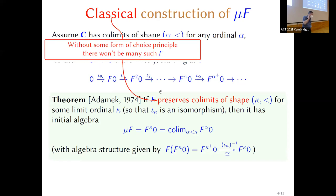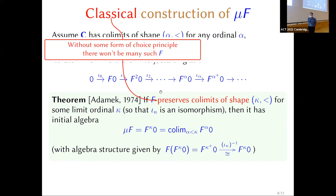The other issue is that constructively there may not be many functors that preserve co-limits of shape κ for some limit ordinal κ. Classically, your functor might be a polynomial functor built using various infinite sets, and to show that it preserves co-limits of size κ for some large ordinal κ you'd end up using the axiom of choice.